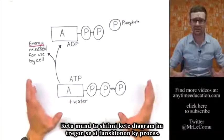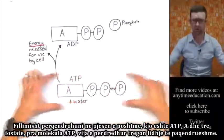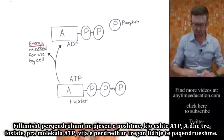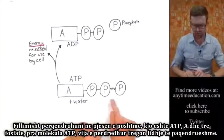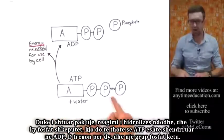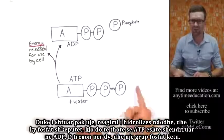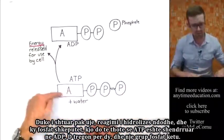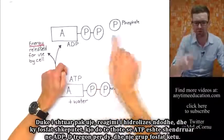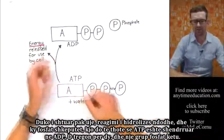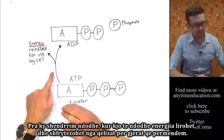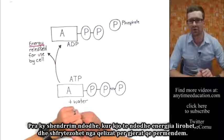Here you can see in this diagram how that process works. I want you to concentrate on this bottom part here — this is ATP, with adenosine and three phosphates, with a squiggly bond showing it's unstable. Now with the addition of some water, a hydrolysis reaction occurs and this phosphate is broken off. That means ATP is converted into ADP — D standing for di, meaning two — and a spare phosphate group. So that conversion takes place and energy is released, used by the cell for the things we just looked at.